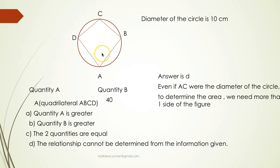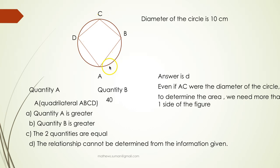Even if AC were the diameter of the circle, to determine the area we need more than one side of the figure. So with just knowing that the diameter is 10, it is not possible to determine the area of quadrilateral ABCD. Therefore, the relationship cannot be determined from the information given.